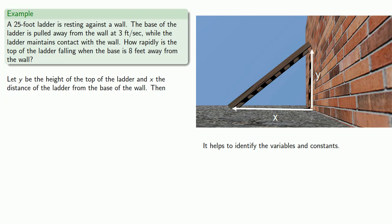And we'd like to find some relationship between these variables and maybe some other things. Well notice that the length of the ladder doesn't change and that x, y, and the ladder itself form three sides of a right triangle. And that means the Pythagorean theorem tells us that x squared plus y squared equals 25 squared.